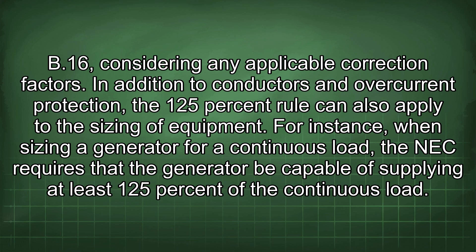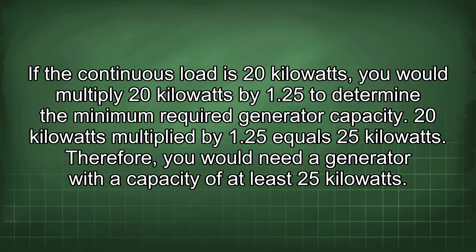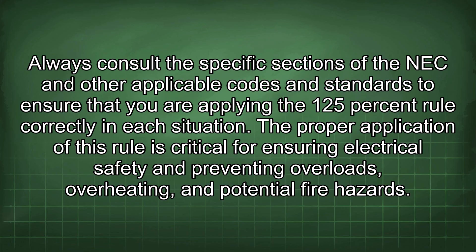In addition to conductors and overcurrent protection, the 125% rule can also apply to the sizing of equipment. For instance, when sizing a generator for a continuous load, the NEC requires that the generator be capable of supplying at least 125% of the continuous load. If the continuous load is 20 kW, multiply 20 kW by 1.25: 20 × 1.25 = 25 kW. Therefore, you would need a generator with a capacity of at least 25 kW. Always consult the specific sections of the NEC to ensure correct application, as proper use of this rule is critical for preventing overloads, overheating, and potential fire hazards.